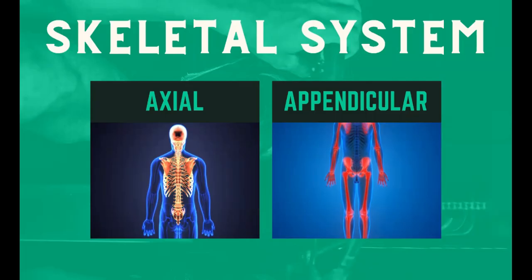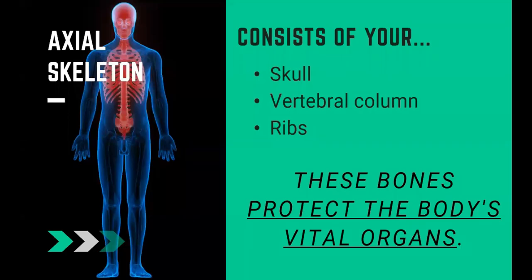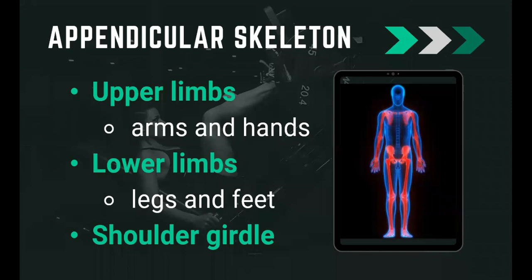The skeletal system can be divided into the axial and appendicular skeleton. The axial skeleton consists of the skull, the vertebral column, and the ribs — these bones protect the body's vital organs. The appendicular skeleton includes the upper limbs (arms and hands), the lower limbs (legs and feet), and the shoulder girdle.